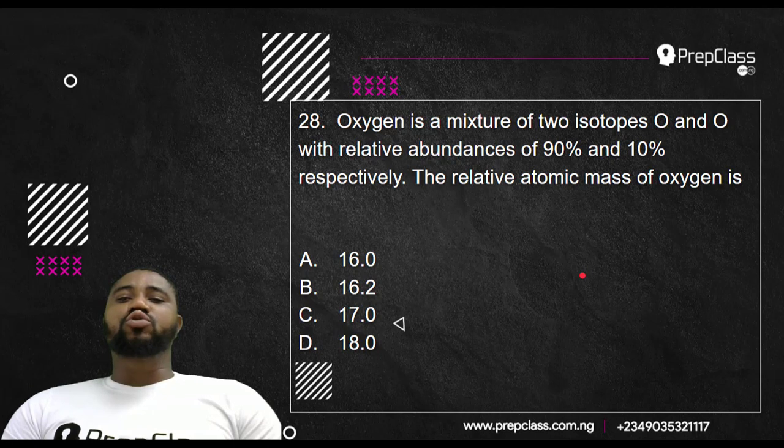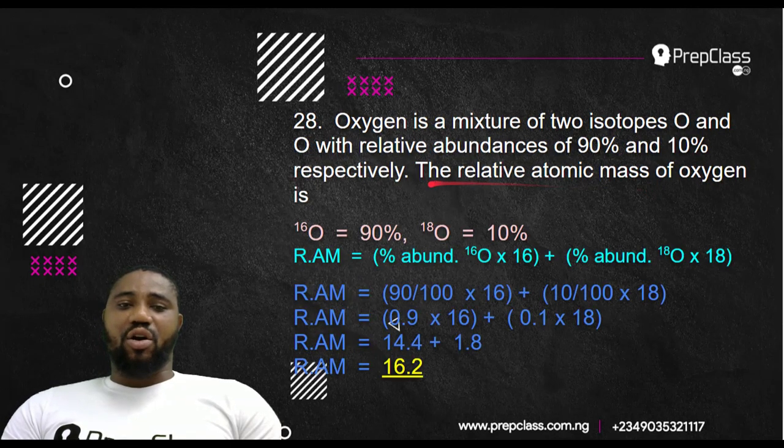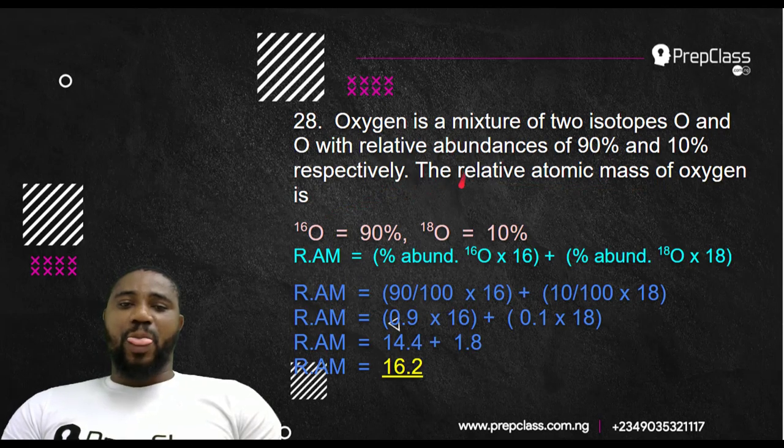Question number 28. Oxygen is a mixture of two isotopes, O-16 and O-18, with relative abundances of 90% and 10% respectively. Relative atomic mass of oxygen is, this typo is from JAMB, this is the way they typed it in the question box. I made a correction here.